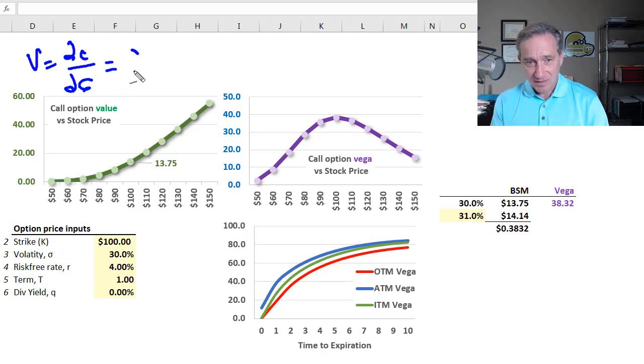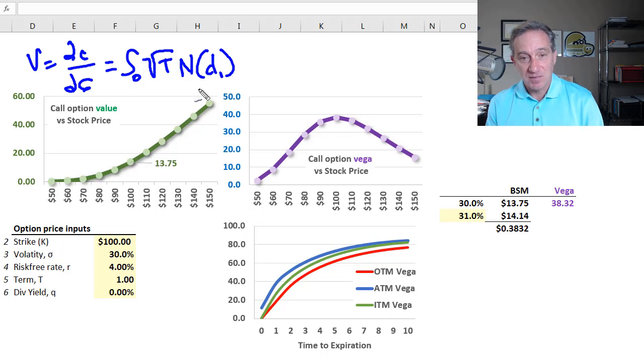Mathematically, Vega's formula is pretty straightforward. It's the current stock price multiplied by the square root of maturity, then multiplied by N' of D1, which is the same N of D1 that we see in the Black-Scholes-Merton. N of D1 is the cumulative standard normal distribution function, except here we have an apostrophe to signify that we're taking the derivative of that CDF. The derivative of a CDF is a PDF, or probability density function.